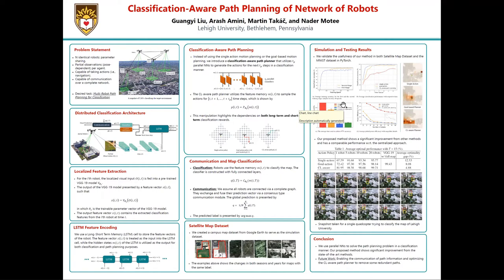In this paper, we validate our proposed architecture with a satellite map dataset. We created a dataset from 10 different universities using Google Earth to serve as a simulation dataset. The following picture shows the map dataset of Lehigh University. The dataset captures changes in both long-term and short-term — meaning different seasons and years. In order to increase the difficulty of classification, we also added random clouds over the original maps, such that robots need to travel to regions not covered by the clouds.